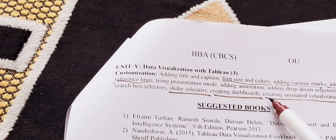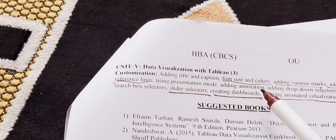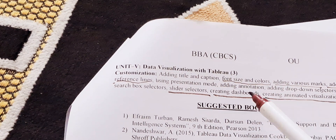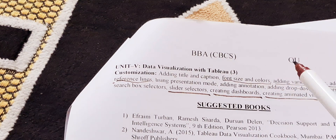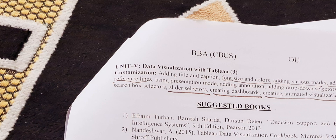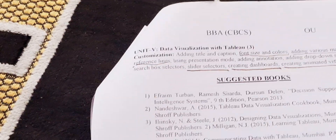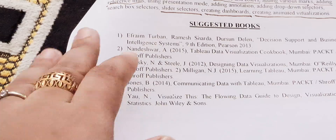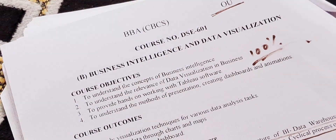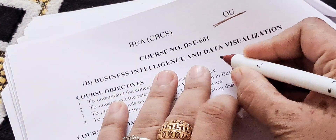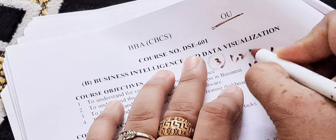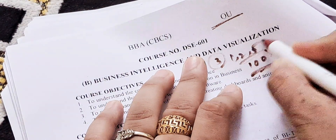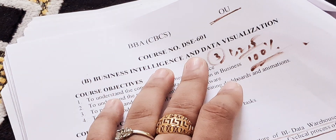Unit five has no single standout question — anything can come from it, so try to learn the whole unit. If you have less time, focus on the topics I highlighted. For those who just want passing marks, learn units one, two, and five — you will get 100 percent pass marks. Those aiming for 50 to 60 percent can focus on just those three units.